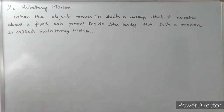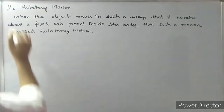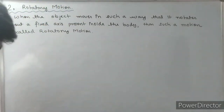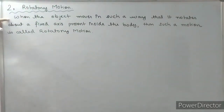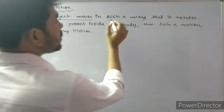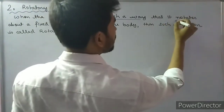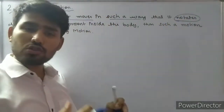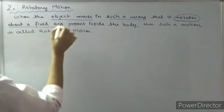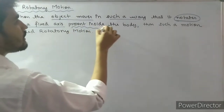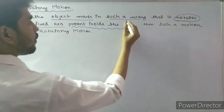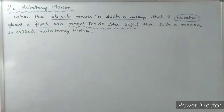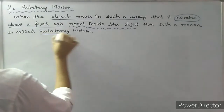Let's move on to the next category: rotatory motion. When an object moves in such a way that it rotates about a fixed axis present inside the body, such a motion is called rotatory motion.